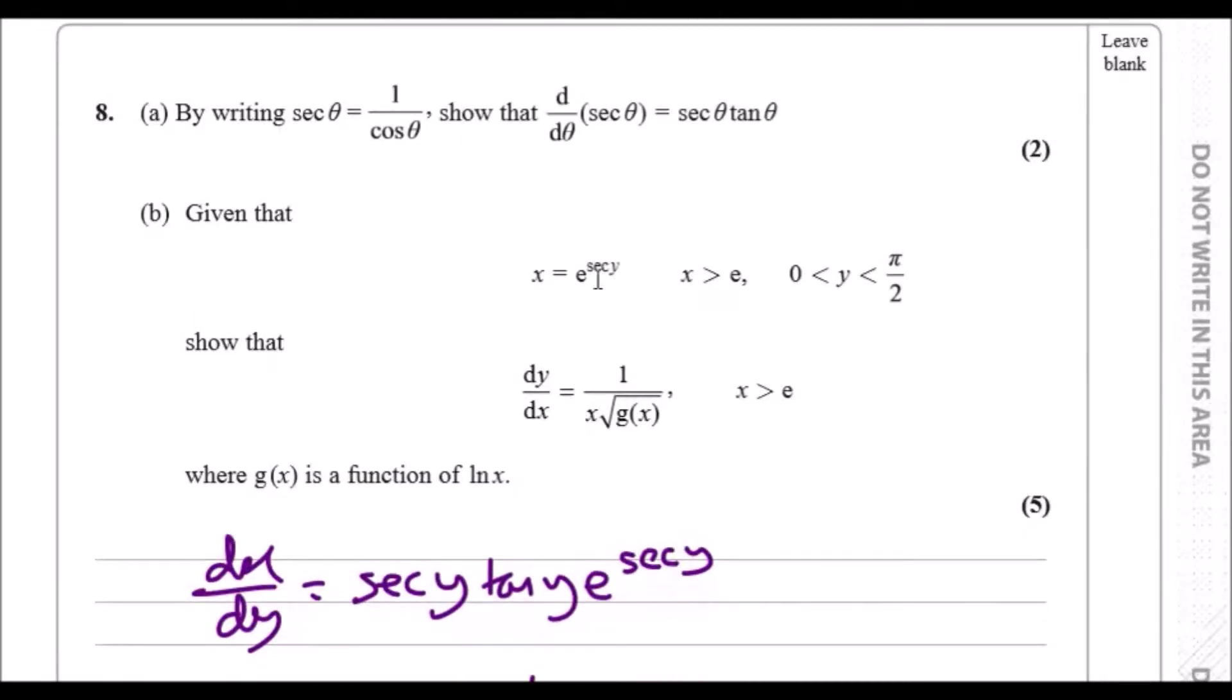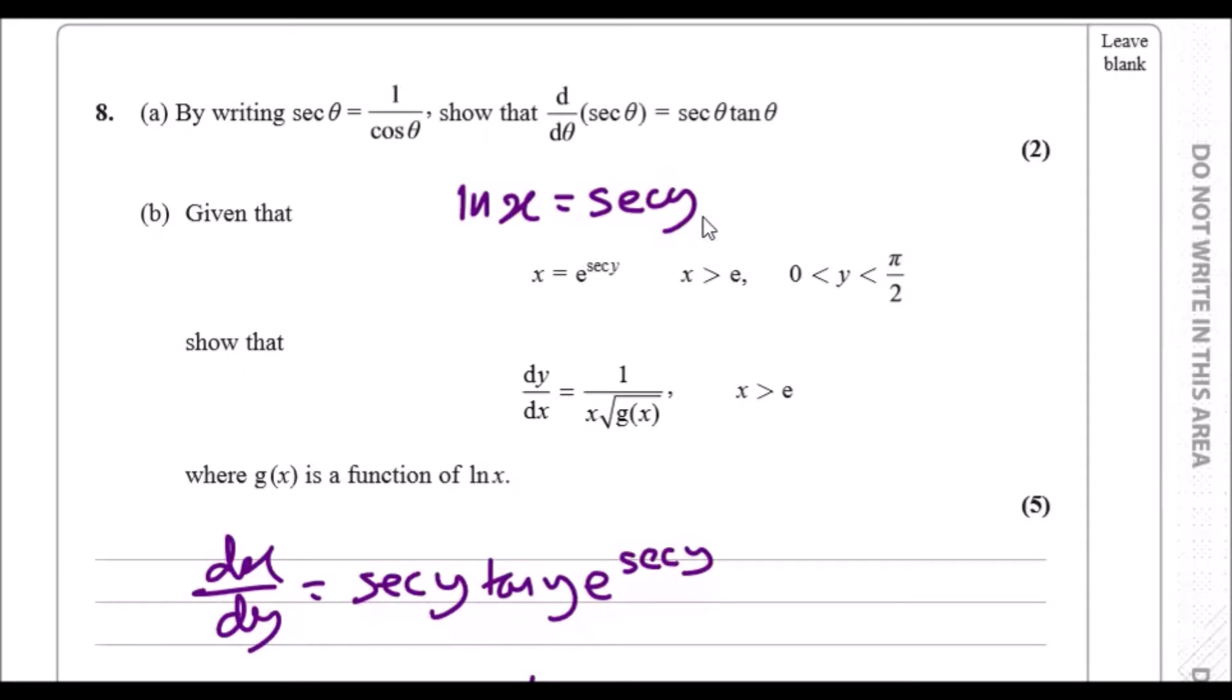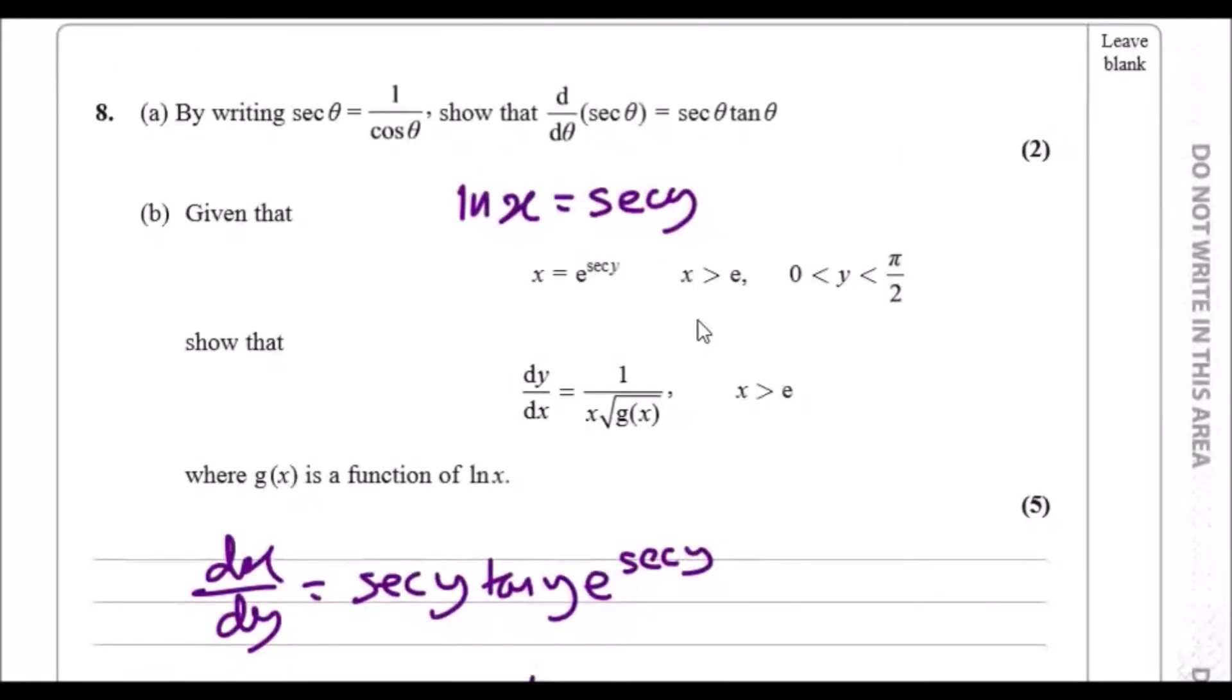What about sec y and tan y? Well, let's rearrange for a second. Let's take ln on both sides: you're gonna have ln x here, and taking ln on the right you're gonna have just sec y because ln and e cancel out. So now we can say that sec y here is ln x.